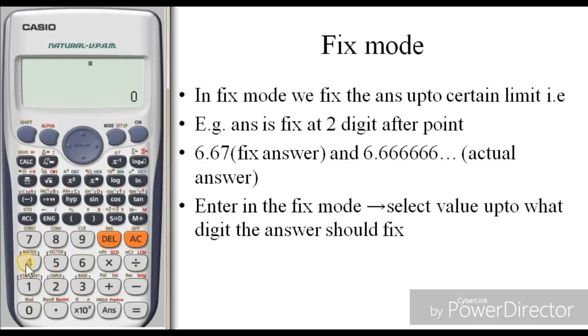You can see here if I'm doing a calculation: 40 divided by 6, and then we got the answer 6.6666667. If I want to fix the answer up to two decimal places, that is the answer is 6.67, then enter the fix mode, then shift mode. You can see here up to 6 number fix mode.